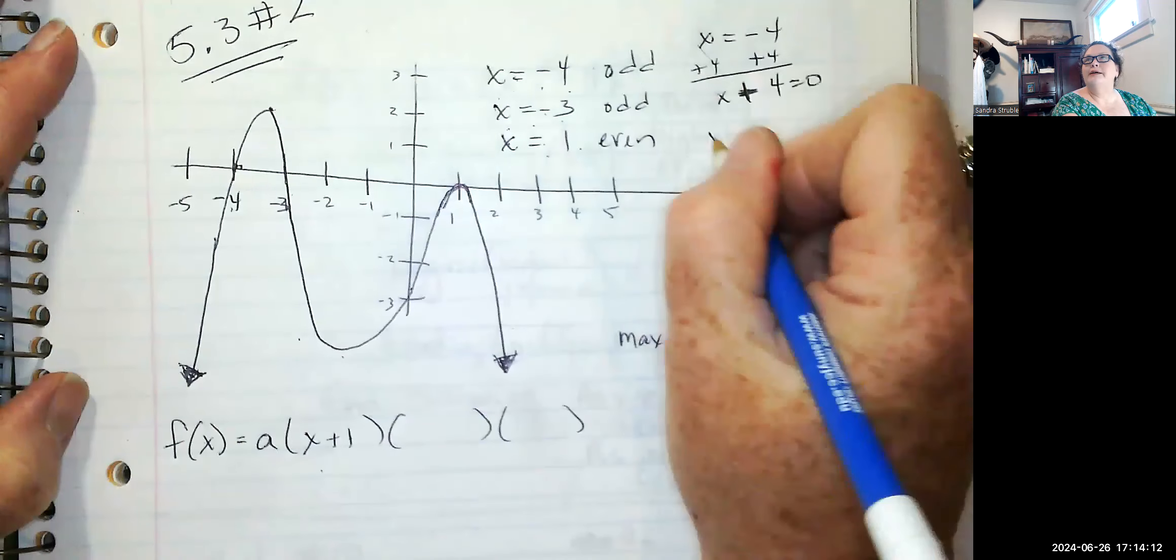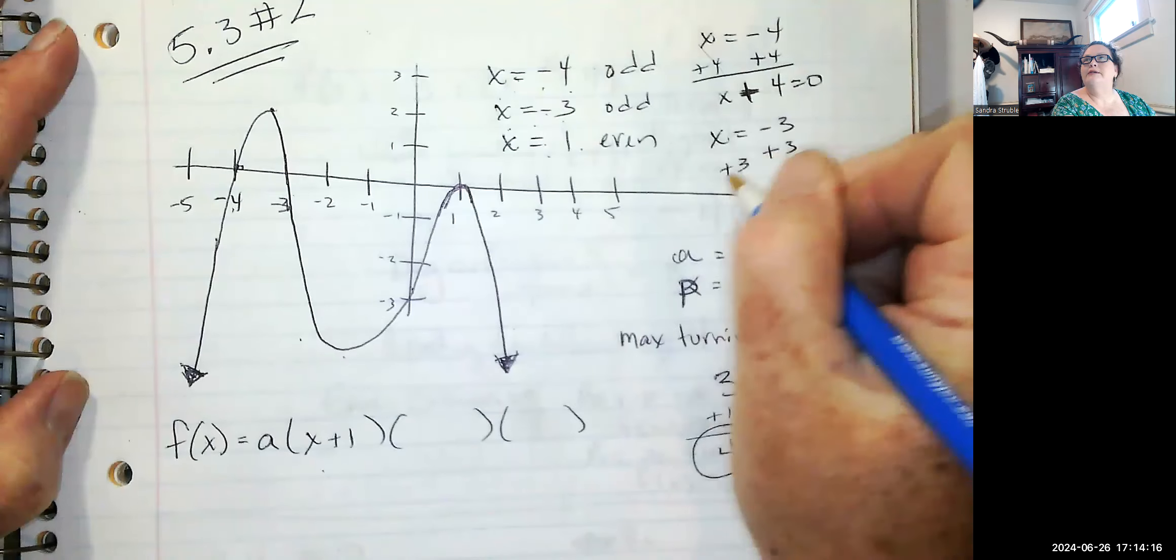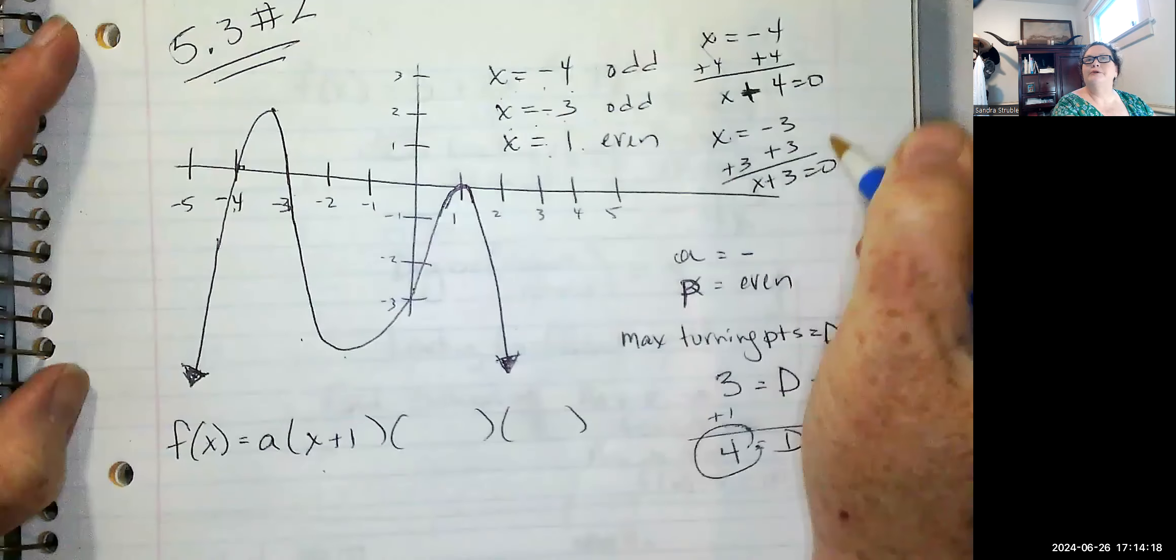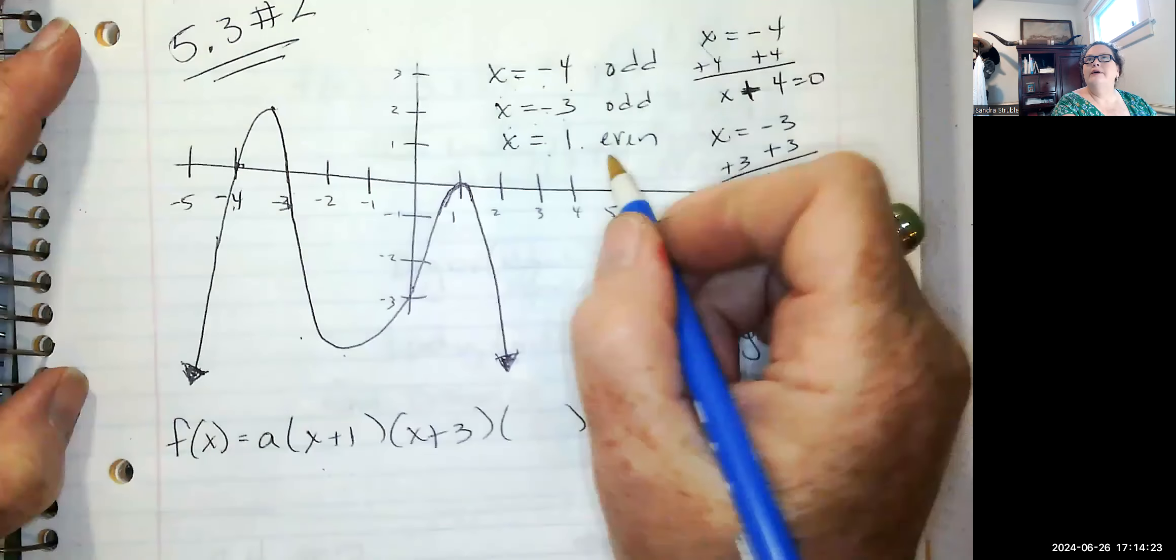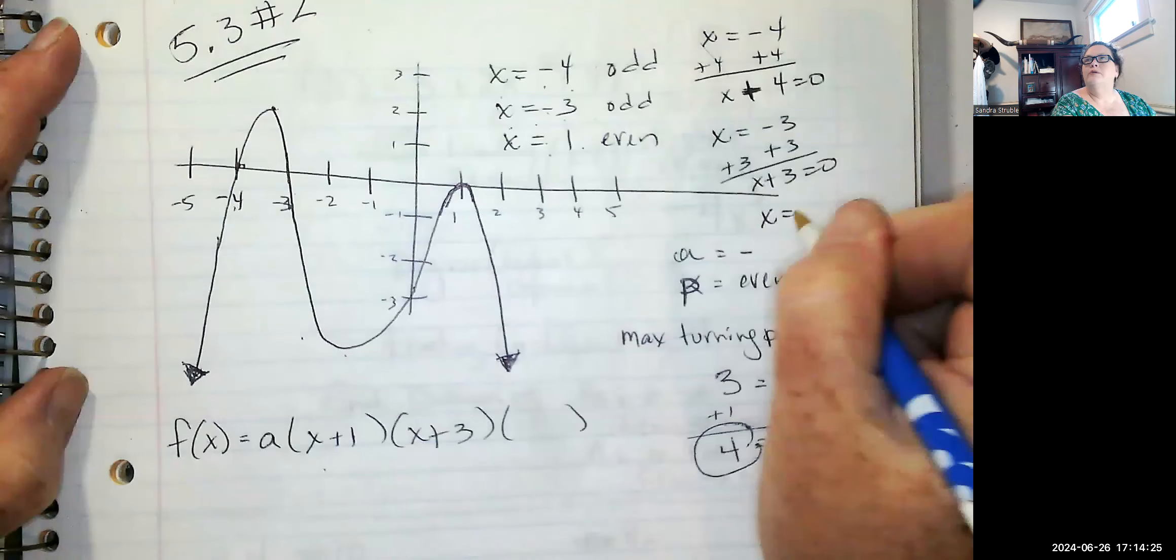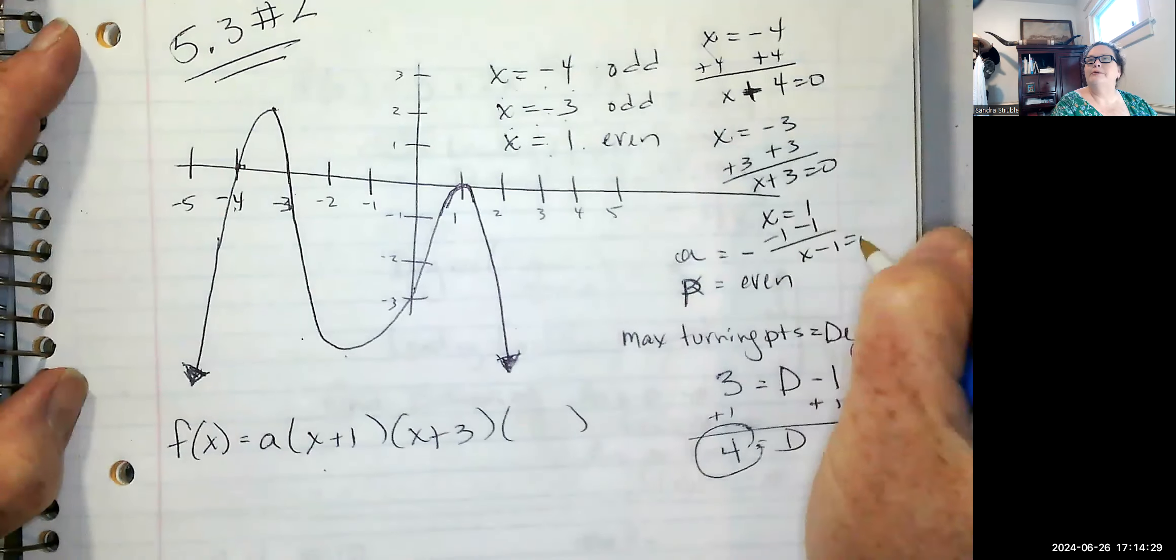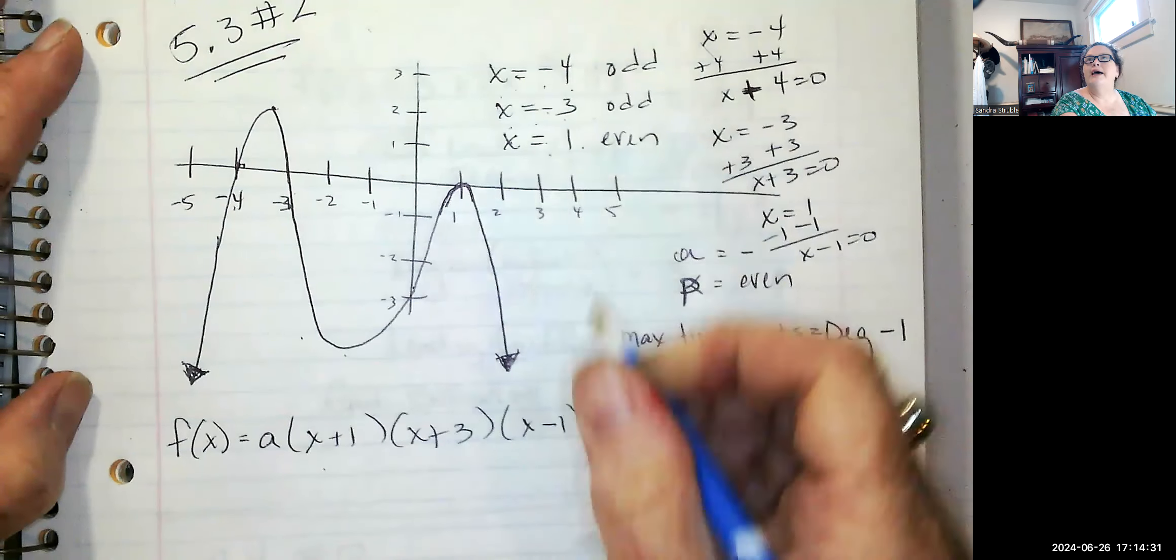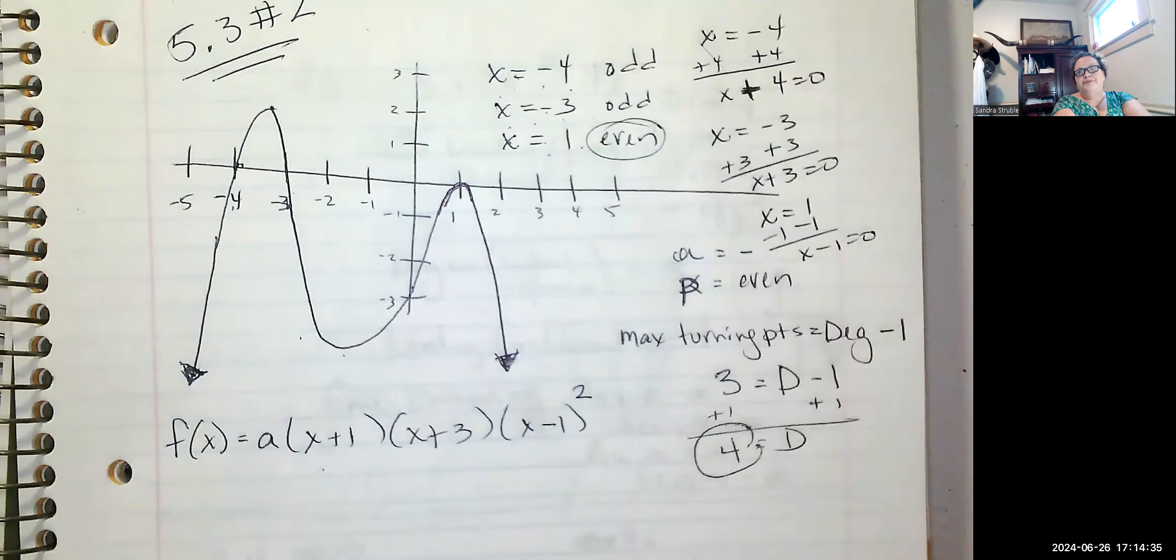X equals negative three. Let's set it equal to zero by adding three to both sides. So X plus three is equal to zero. And it's odd as well. So I'm going to leave it as one. And then X equals one. We're going to set it equal to zero. So X minus one equal to zero. This one's even. So it has to be at least a two.